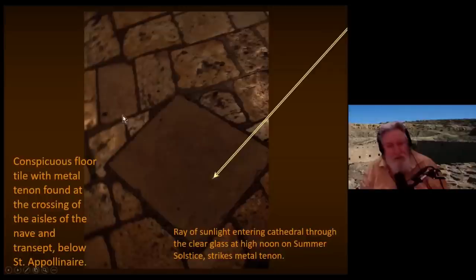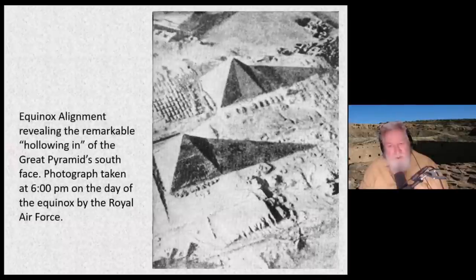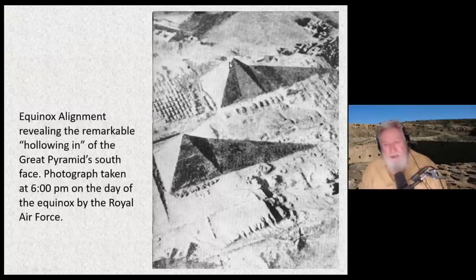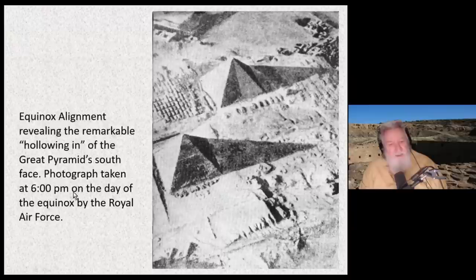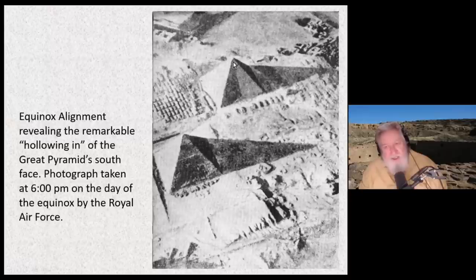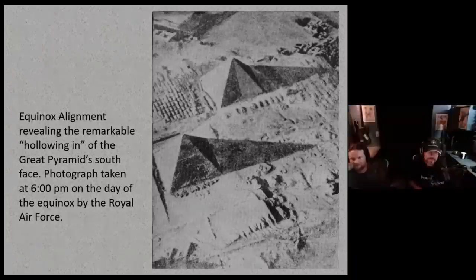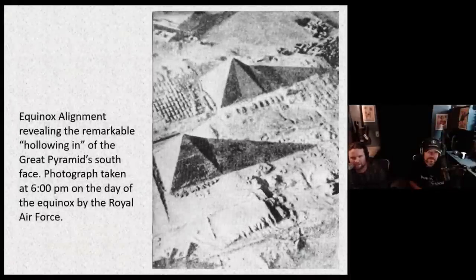The Great Pyramid has indentations in its sides — it's actually not four-sided but eight-sided. This only shows up when the sun is essentially due east. This photograph was taken at 6 p.m. on the day of the equinox by the Royal Air Force. You can see the shadow line and a very shallow but distinct inset in the geometry of the pyramid, which would have been much more obvious when the casing stones were still on. This is a phenomenon that shows up only on the equinoxes.